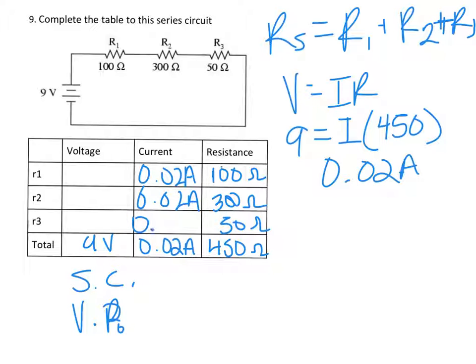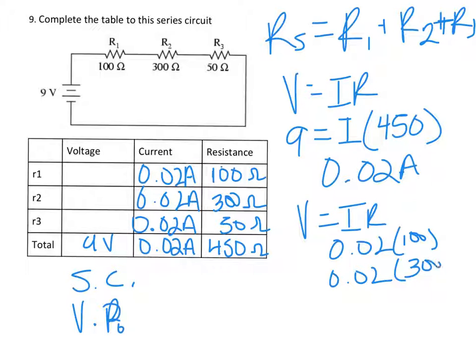Which again, you're using Ohm's law: V equals IR. You'd plug in your current and resistance for each. So it'd be 0.02 amps times 100, 0.02 times 300, and then 0.02 times 50. My handwriting is really sloppy in this video. So you'd multiply all of those out, and your voltage is going to be 2, 6, and 1 volts each. All right, so now we've solved everything.